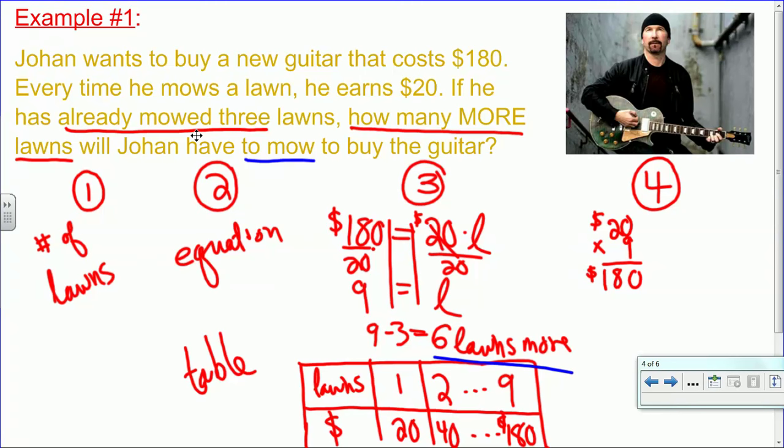So you can see that I've broken this up, and I've listed the separate steps that make up Polya's method. You can see the first is understand the question. We're wondering, what is it here that we're doing? What are we trying to figure out? And it's how many lawns, how many more lawns, will Johan have to mow? So we know that our answer is going to be a number of lawns.